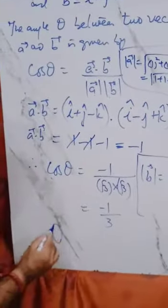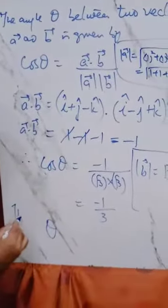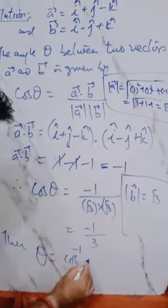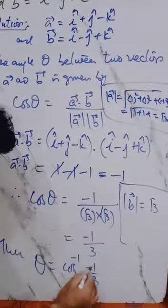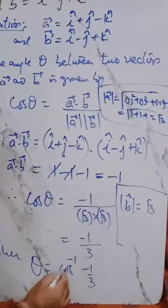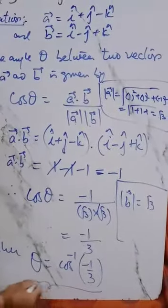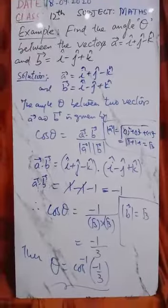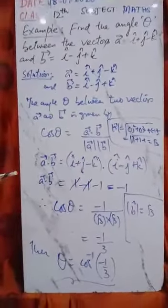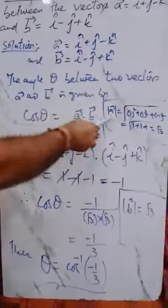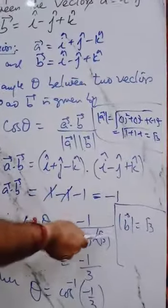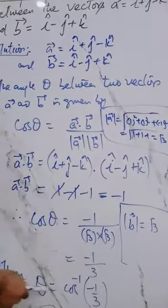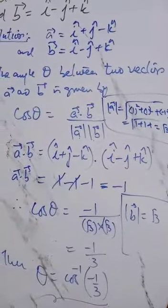Therefore cos theta is equal to minus one by three. Then theta is equal to cos inverse of minus one upon three. This is the angle between the two vectors a and b. First find the magnitude of a, then find the magnitude of b, and then theta is cos inverse of minus one upon three.